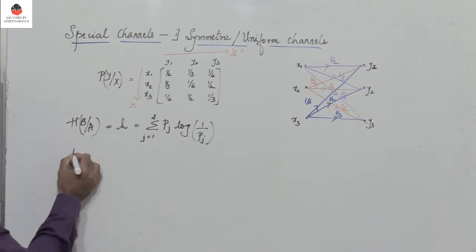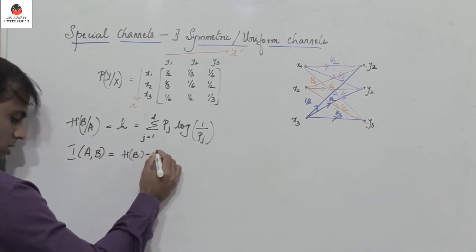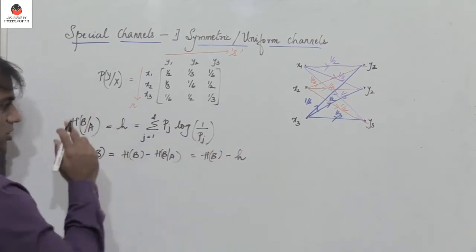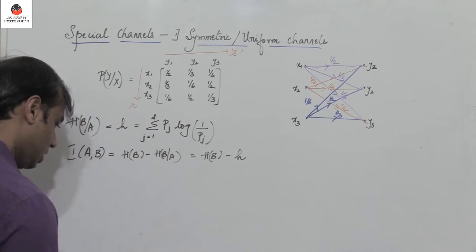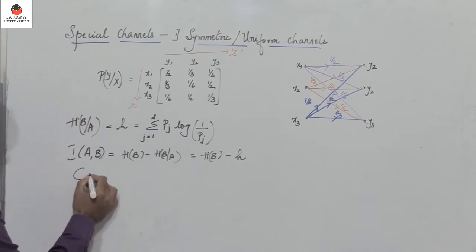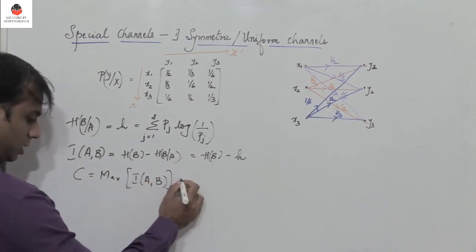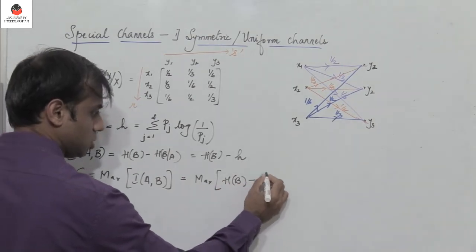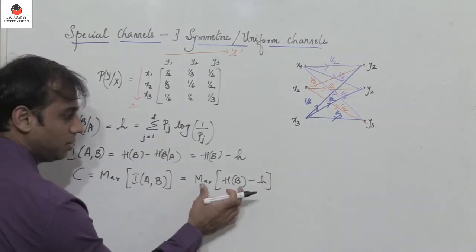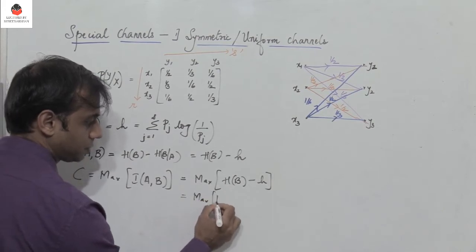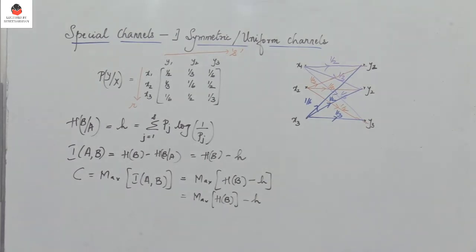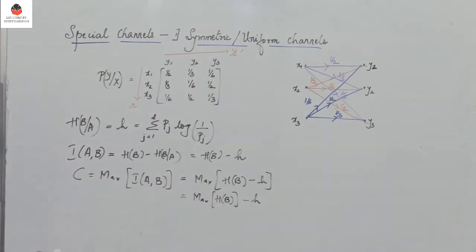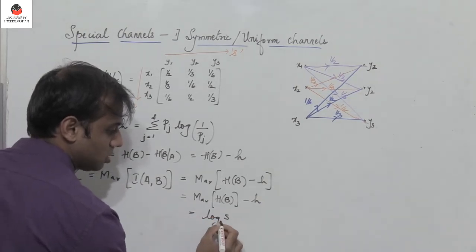Mutual information is given by h of b minus h of b given a. Since h of b given a is a constant h, mutual information becomes h of b minus h. The channel capacity is given by c equals max of the mutual information I of a, b. Since h is constant, this becomes max of h of b minus h, which means we need to maximize h of b.